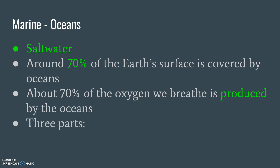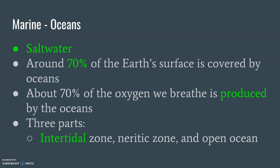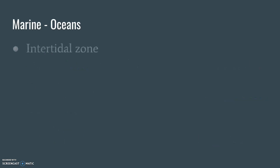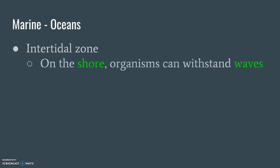Ocean life has a bunch of plant life as well. There are three parts of the ocean we need to know about: the intertidal zone, the neuritic zone, and the open ocean. Starting at the beach, the intertidal zone is where the shore is — kind of where the sand meets the water. There can be a lot of waves here, so organisms need to adapt to survive those constant waves.